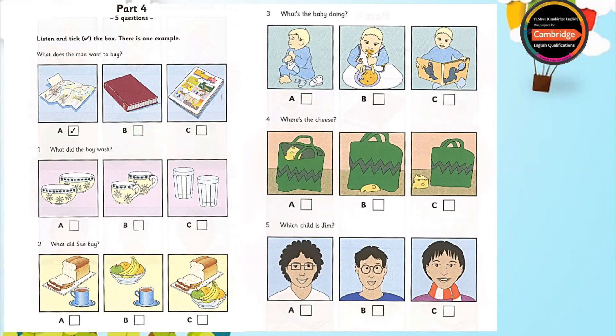Can you see the tick? Now you listen and tick the box. 1. What did the boy wash? I washed some of the things in the kitchen, Mum. Oh, good. The cups were very dirty. Did you wash them? Oh, I didn't see them. But the glasses are clean now. Well, thank you. Now, can you put those bowls in the cupboard, please?